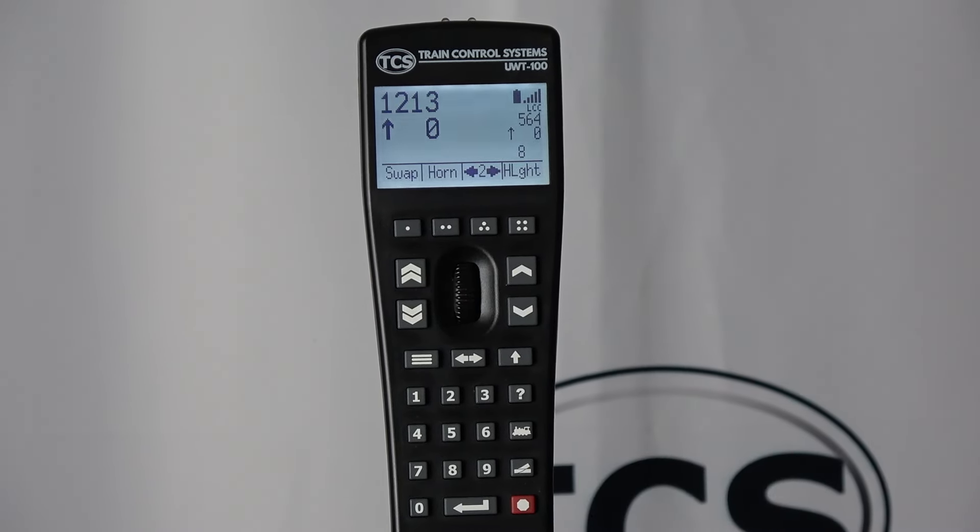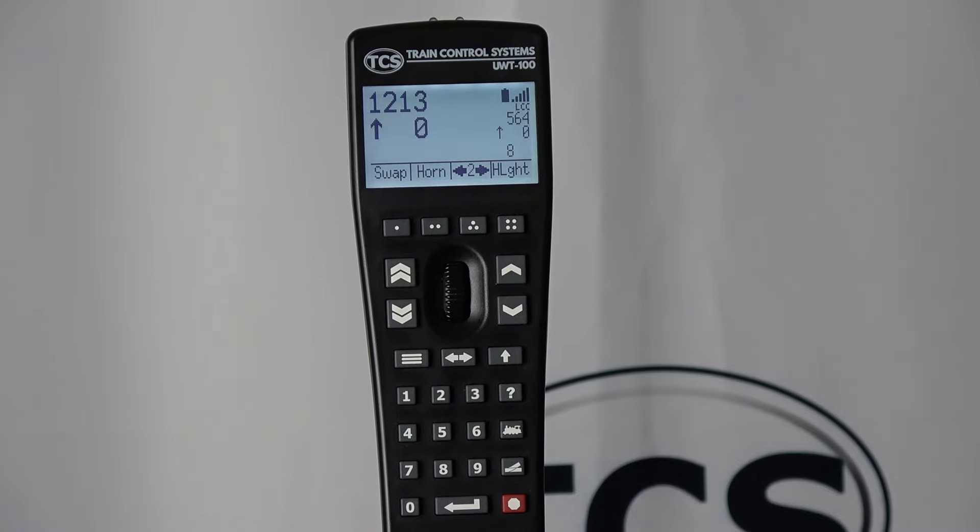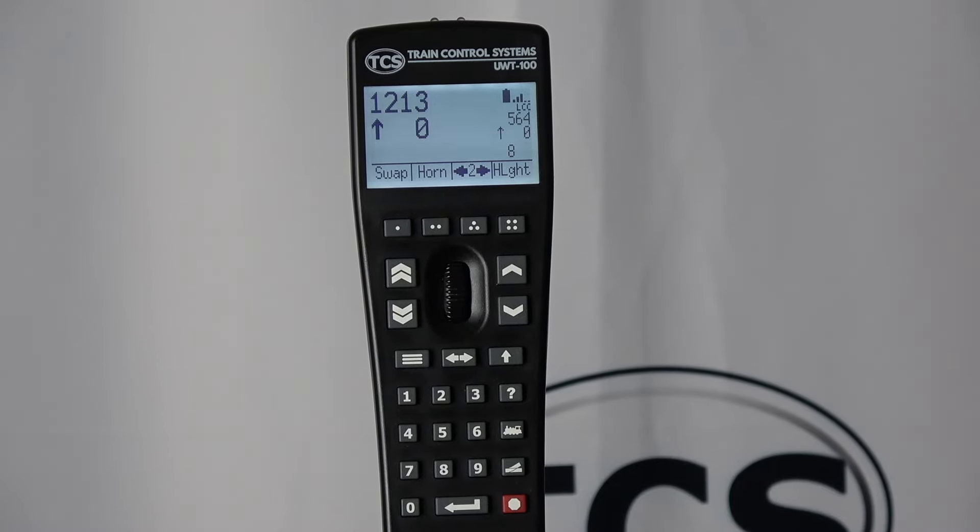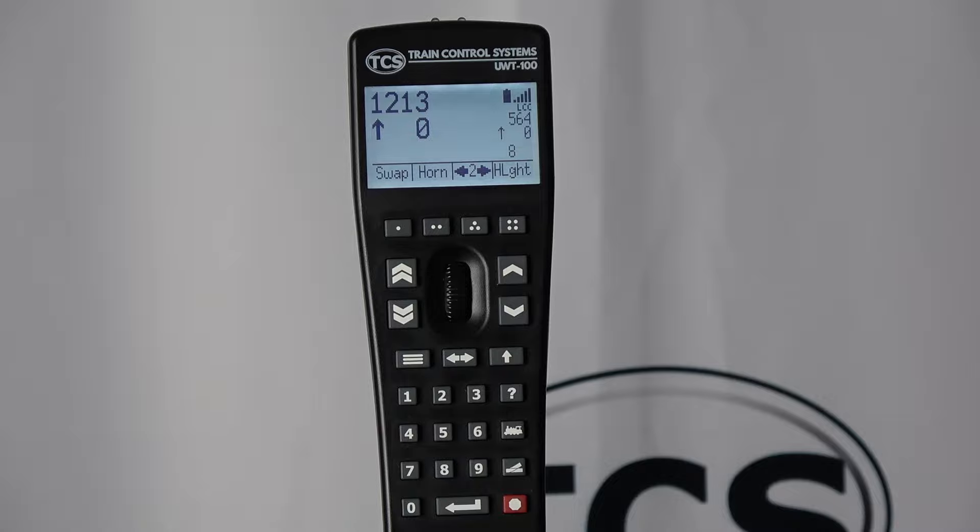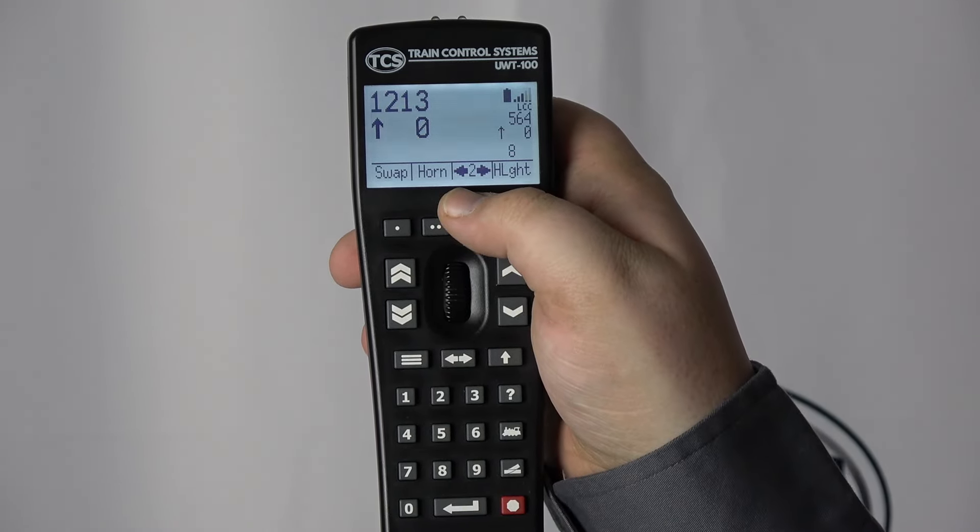Your throttle will remember this setting. Now your secondary slot has the ability to change directions using the soft key. When you exit dual throttle mode, the dual direction soft key will revert back to its original setting. By default, this is the bell.